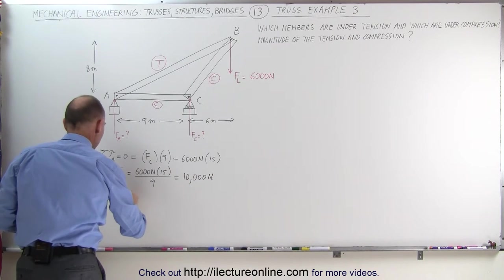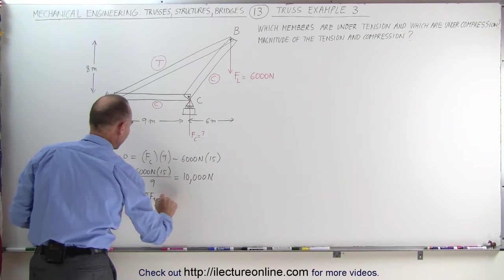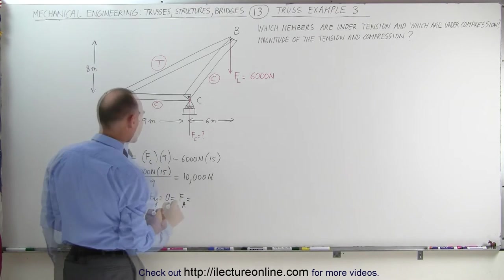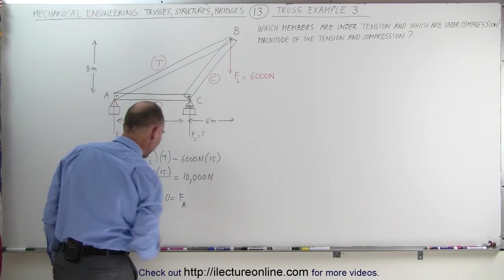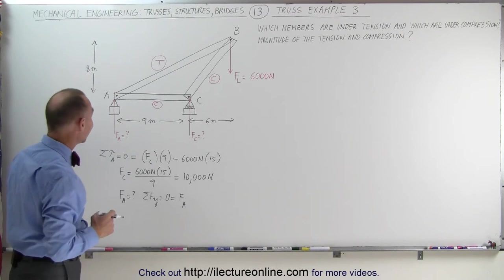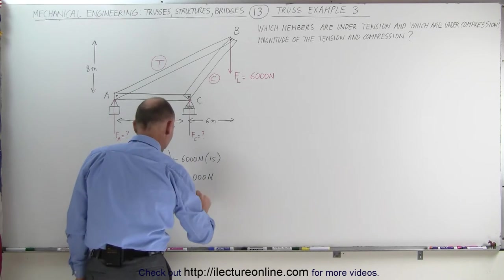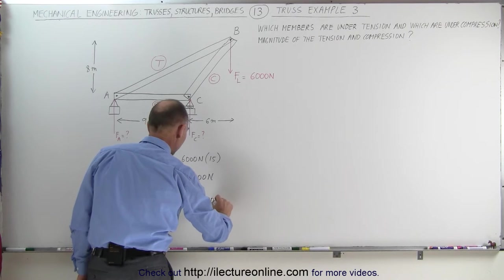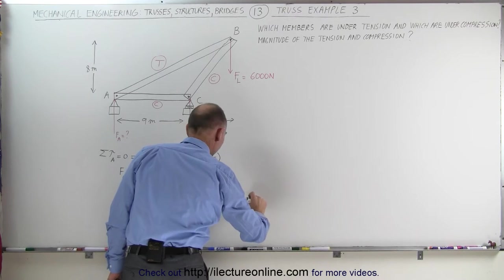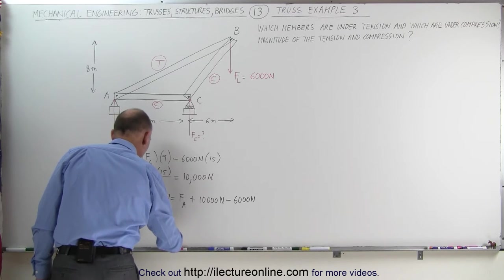The force of A can be found by saying that the sum of forces in the y-direction must add up to zero. We have F sub A plus F sub C, which is 10,000 Newtons, minus the 6,000 Newton load. If we solve this, surprisingly we get F sub A equal to minus 4,000 Newtons.